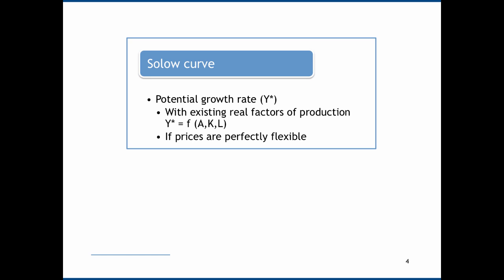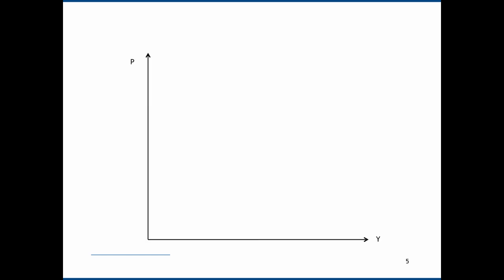Y star is a function of A, multi-factor productivity; K, which stands for capital; and L, which stands for labour. Depending on the raw inputs that we have, this will determine the potential growth rate we can achieve, which is Y star. This also makes an assumption that prices are perfectly flexible, so Y star is telling us what we will see with existing real factors and flexible prices. Given that Y star is independent of nominal factors such as inflation, we show it as a vertical line. Real growth is driven by real productivity — this demonstrates the classical dichotomy.